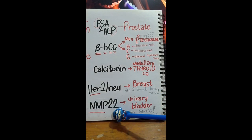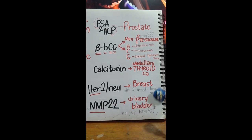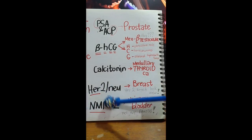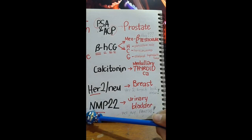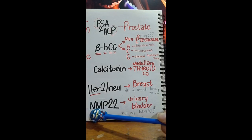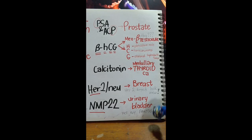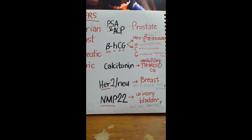Lastly, NMP-22 — nuclear matrix protein 22 — is used for urinary bladder cancer. To remember it's for the bladder, we can interpret NMP as 'not my pantog,' because we don't want our pantogs to have cancer.